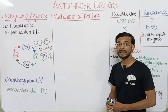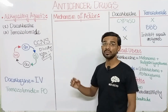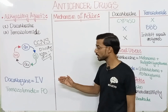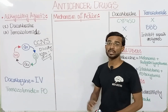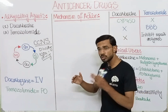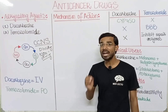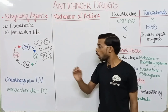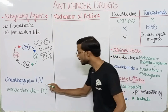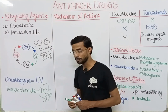Dacarbazine is administered through the intravenous (IV) route, while temozolomide is taken orally or can also be given intravenously. However, the bioavailability of temozolomide is highest through the oral route — that is the most important point.